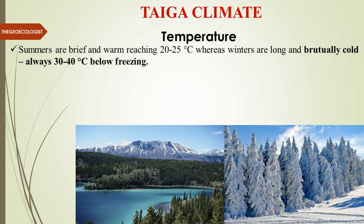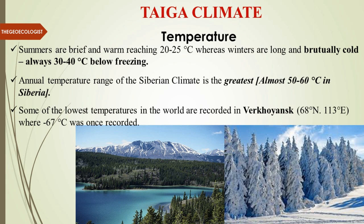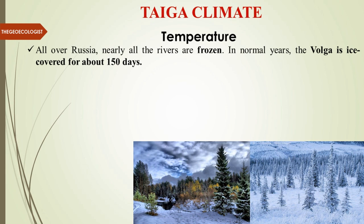Now let's understand the Taiga climate in terms of temperature. As it sits between the Arctic Circle and steppe grasslands, there is a wide range of temperature variation. Summers are brief and warm, reaching 20 to 25 degrees Celsius, whereas winters are long and brutally cold — about minus 30 to minus 40 degrees Celsius. The annual temperature range of the Siberian climate is the greatest in the world, almost 50 to 60 degrees Celsius. Some of the lowest temperatures are recorded in Verkhoyansk at minus 67 degrees Celsius.